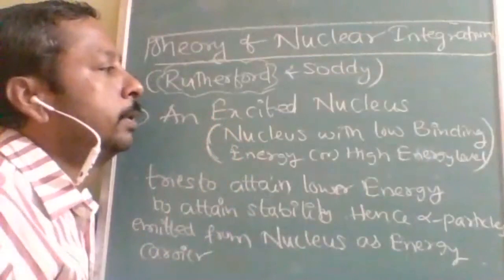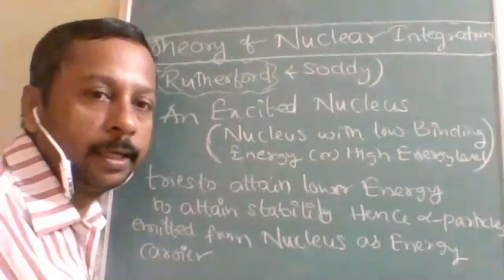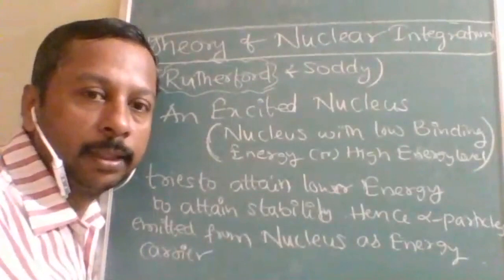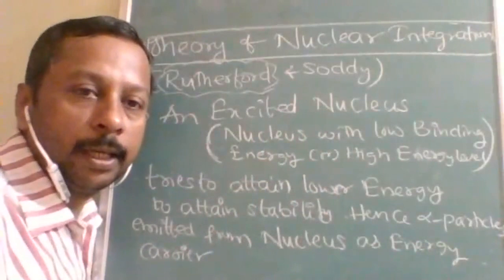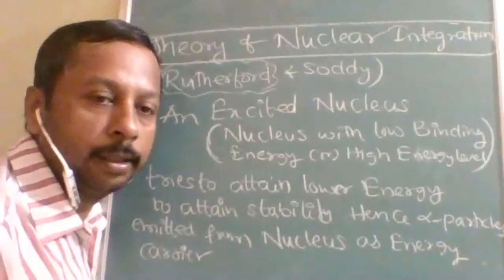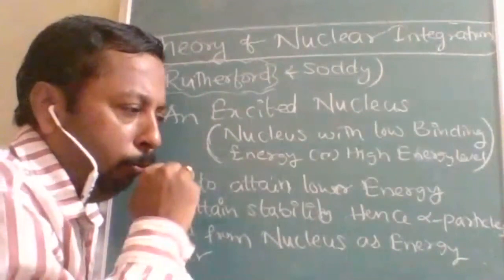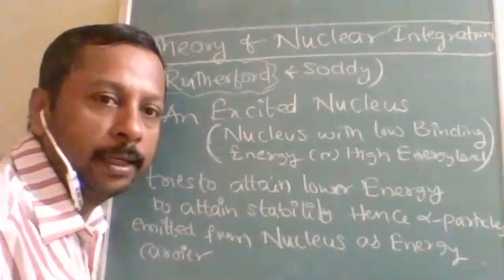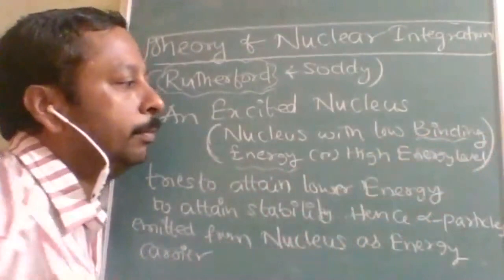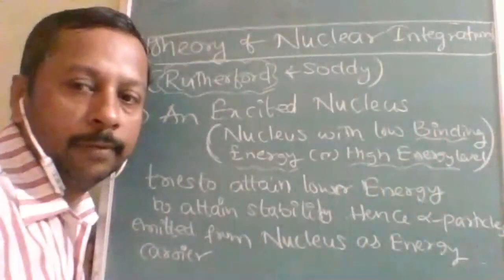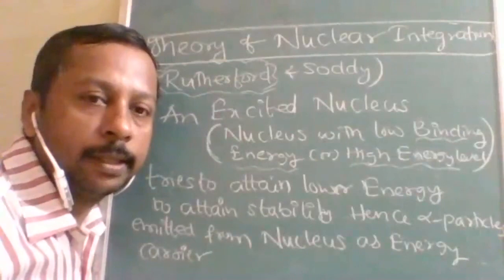Like every theory, there will be postulates. Here we take an atom in an excited state. In nuclear chemistry, we are talking more about the nucleus. When we say an atom is in excited state, electrons have more energy than required. When we say an excited nucleus, it means in terms of binding energy — the energy level is more, or binding energy is less. Then we say the nucleus is in the excited state.